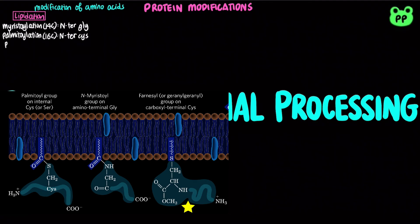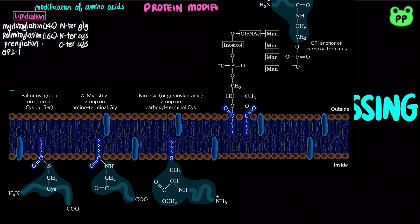Prenylation refers to the addition of prenol groups, including farnesol and geranylgeraniol, both of which are components of intermediates of cholesterol biosynthesis. They are typically attached to the C-terminal cysteine residue. Finally, glypiation, or GPI-linked, refers to the attachment of glycosylphosphatidylinositol, which is a sugar phospholipid, usually attached to the C-terminus.